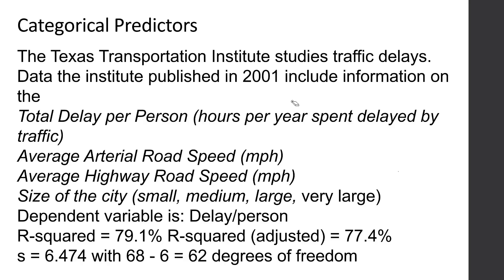The Texas Transportation Institute studies traffic delays. Data published in 2001 include information on the total delay per person in hours per year spent delayed by traffic, average arterial road speed in miles per hour, highway speed in miles per hour, and size of the city - small, medium, large, and very large. How many coefficients am I going to get in my regression output? I'm going to have my intercept, my coefficient for arterial road speed, for highway speed, and I'm going to have a coefficient for just three of the levels of my categorical variable. If I have one in there for small, one for medium, one for large, all I'd have to do is put a zero in for all three of those to get what the model does under the very large situation.